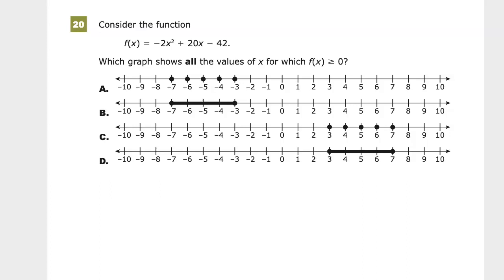This is the Algebra 1 practice test for TN Ready. On this version of the test, it's question number 20. Consider the function f(x) = -2x² + 20x - 42. Which graph shows all the values of x for which f(x) ≥ 0?